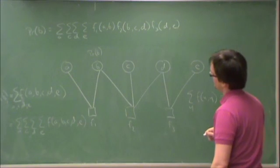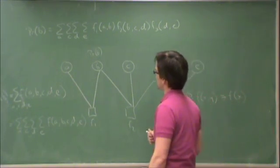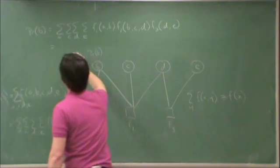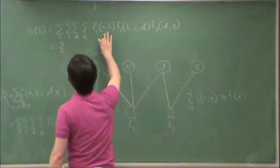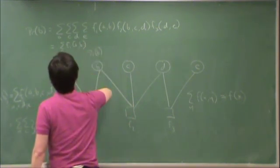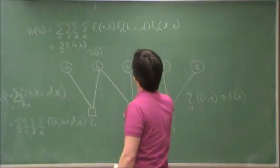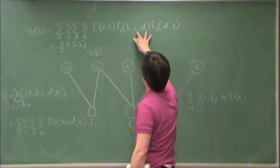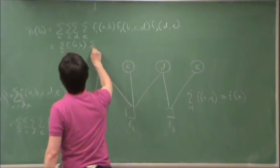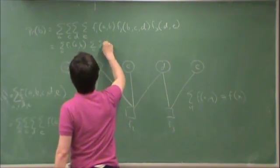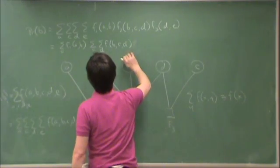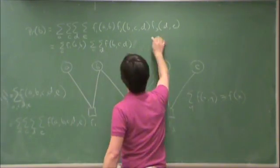But not all of these factors appear in all of the sums. So in fact, I can rearrange the sums as follows. I can sum over A. The only term in which the sum over A appears is this one. C and D appear in these two. E only appears in this one.